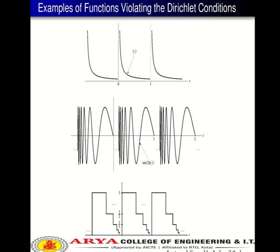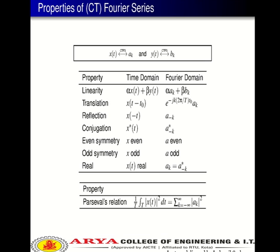Here is an example of functions violating the Dirichlet conditions. In the first signal, there is a separation between the signals — that is, it is not a continuous signal: it is 1/T, ends at 0, the fifth period starts after 0 and ends at 1, and so on. In the second signal, sin(2π/T), there are also discontinuities between the periods of the signal.